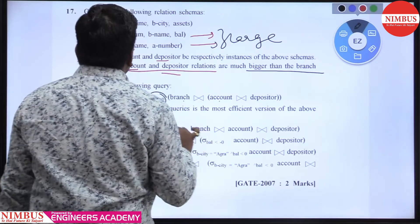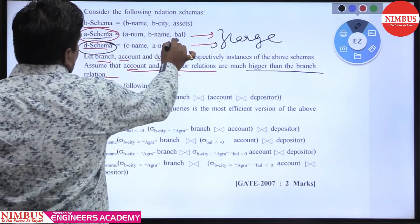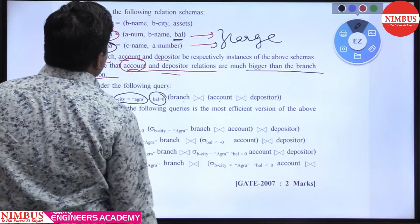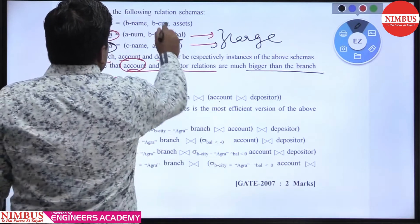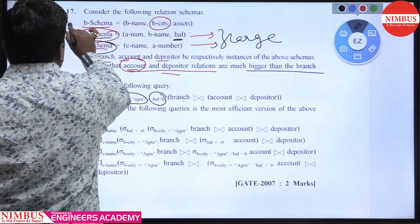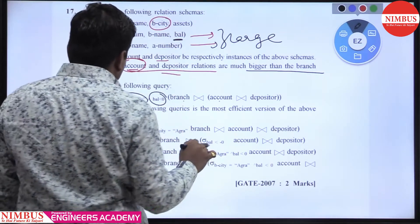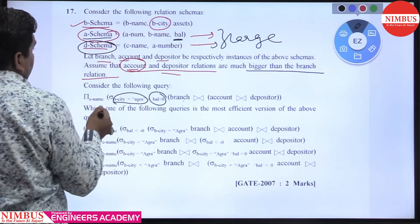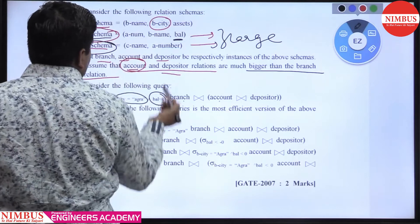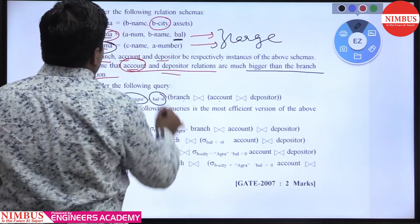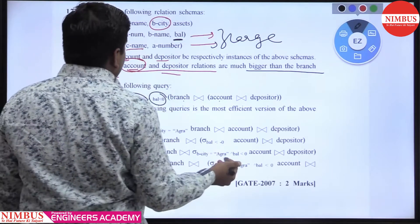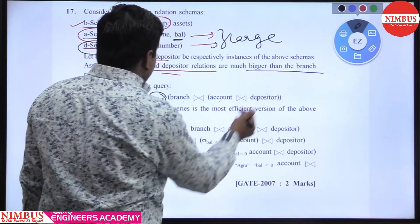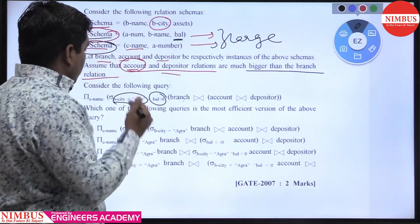First we have to see: balance is in the account schema and branch_ct equal to AGRA is in the branch schema. So branch_ct is AGRA and balance is less than 0, and we have to find c_name — the customer name of the depositor.